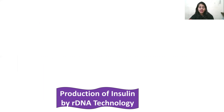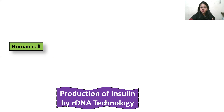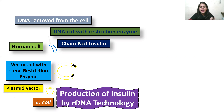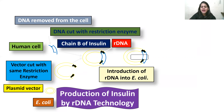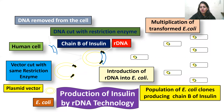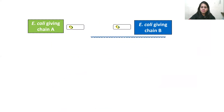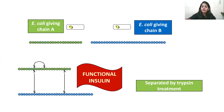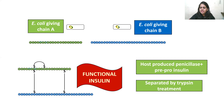Let's see the schematic of how insulin is prepared by recombinant DNA technology. From a human cell, the DNA is cut with restriction enzymes — for example, chain B of insulin is extracted. The plasmid vector is also cut by restriction enzyme, providing a place for the B chain to be inserted, forming recombinant DNA. This is introduced into E. coli, which multiplies to produce large populations of E. coli clones expressing chain B. Chains A and B are prepared separately, joined by disulfide bonds to form functional insulin, and finally separated from E. coli by trypsin treatment.